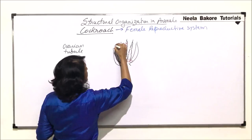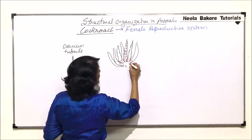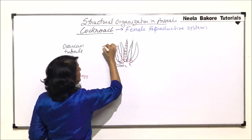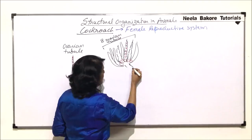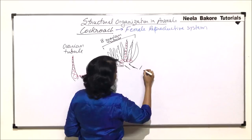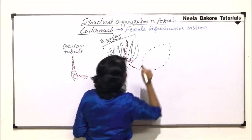So these ovarian tubules — one, two, three, four, five, six — and we can draw one more here so that we remember the number, and one more. So these are the eight ovarian tubules. We have drawn these tubules separated, but we will draw it in a slightly different manner in the other ovary, where the ovarian tubules can be drawn like this.